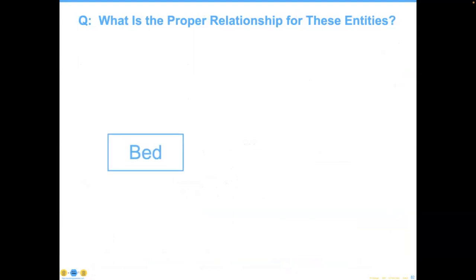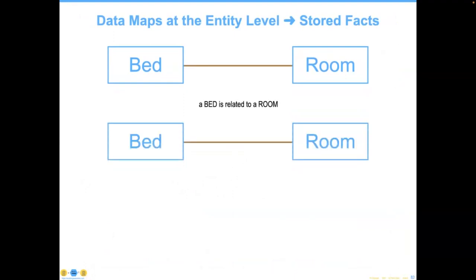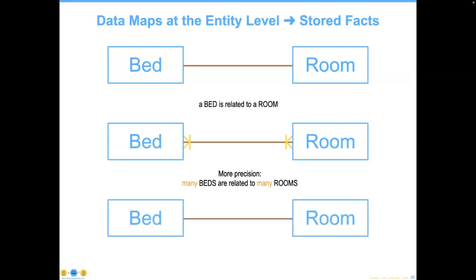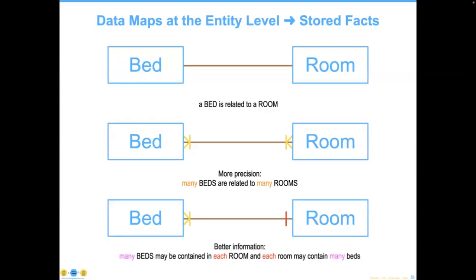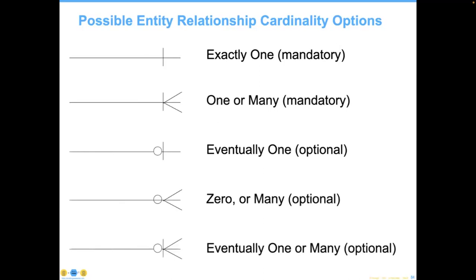Here's another question at the logical level: you've got beds and rooms — what should the relationship be? 'A bed related to a room' — nice attempt, but not good enough. Going deeper: many beds are related to many rooms — a tough information solution problem. The final solution: one room can contain zero, one, or more beds. That third, most precise requirement gives you the most precise focus. These are the five cardinality options: exactly one, one or many, eventually one — adding the element of time — zero, one, or many optionals. Each of these is going to give you a different way to look at it.